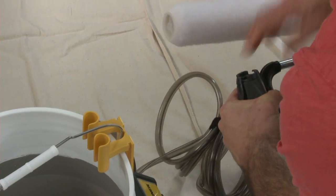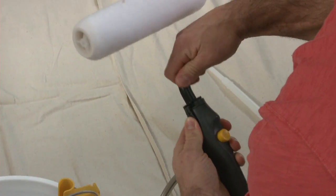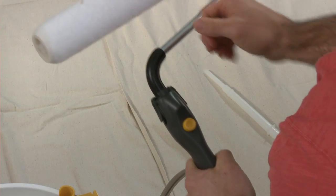Now you're ready to set up the roller. Press the quick release tabs on the handle and attach the roller arm assembly.